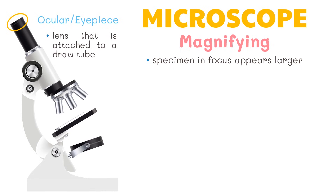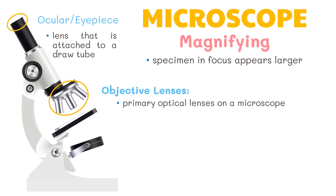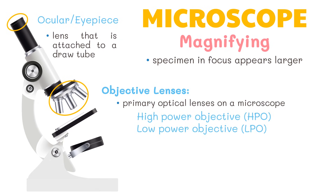Next, these are the objective lenses. The objective lenses are the primary optical lenses on a microscope. They range from 4x to 100x magnification and typically include three lenses on most microscopes: the high power objective, low power objective, and oil immersion.